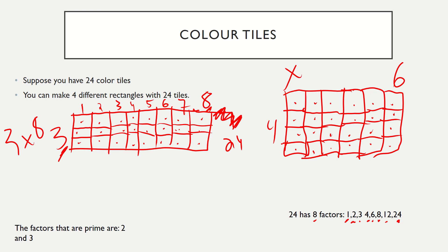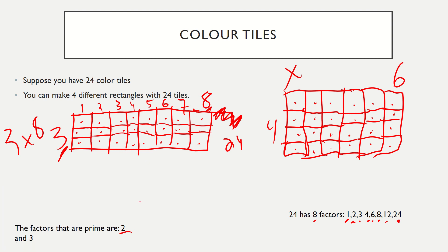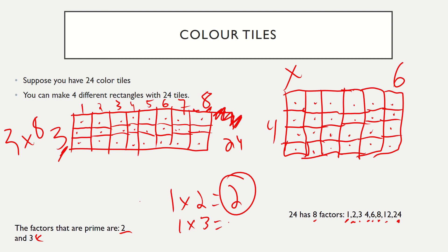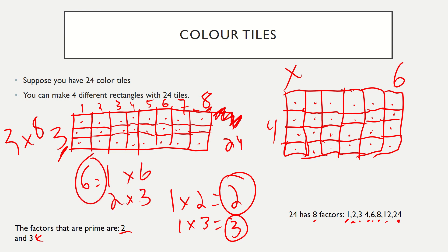Of all these factors, I looked at the ones that are prime and found that two and three are prime. One times two equals two and nothing else can, and one times three equals three and nothing else can. Now if we took the number six — is it prime? One times six equals six, and two times three equals six, so this is an example of a composite number.